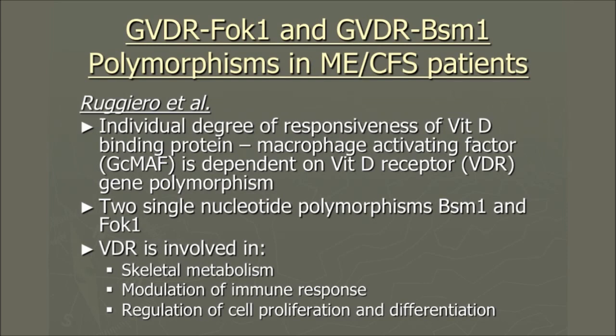Coming back to the susceptibility of macrophages for GC-MAF: there is an individual degree of responsiveness of the vitamin D binding protein for macrophage activation, and it's dependent on the vitamin D receptor — the so-called VDR gene polymorphism. There are two single nucleotide polymorphisms, BSM1 and FLK1, in the population.